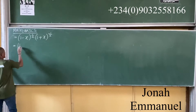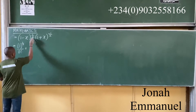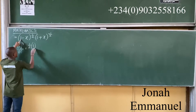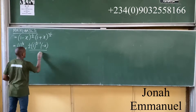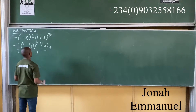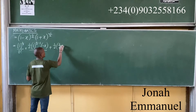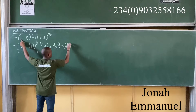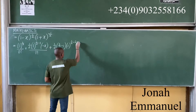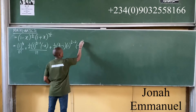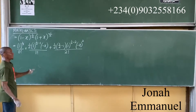For (1 minus x) to the power 1 over 2, this becomes: (a plus b) to the power n equals 1 over 2 all over 0 factorial, plus n times 1 over 2 times a times (n times 1 over 2 minus 1), then b which is minus x, all over 1 factorial, plus n times 1 over 2 times (n minus 1 over 2 minus 1) times a to the power (n minus 2 over 2 minus 2), then b squared which is (minus x) squared, all over 2 factorial. I am expanding to the third term for convenience.